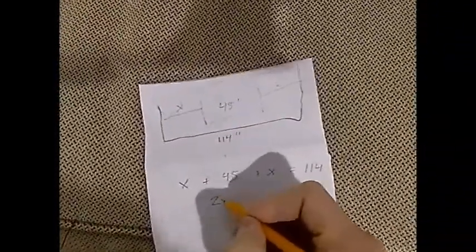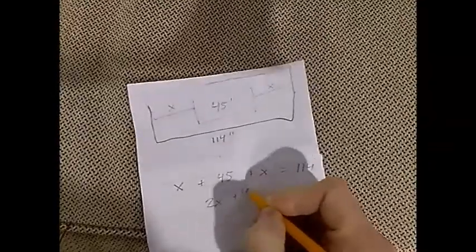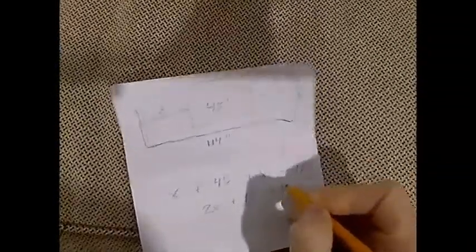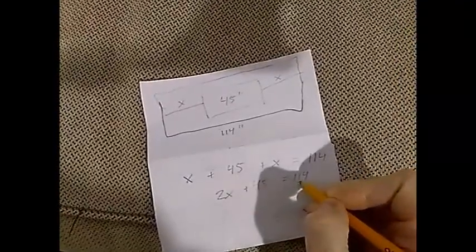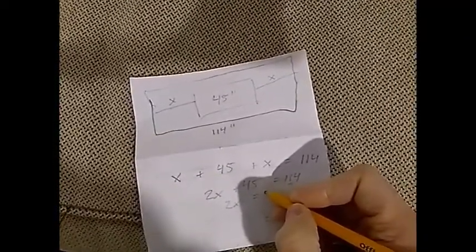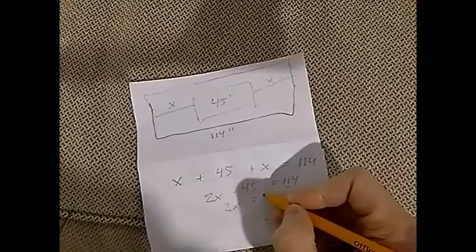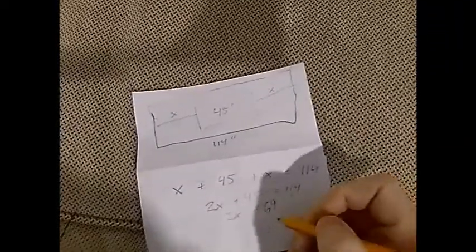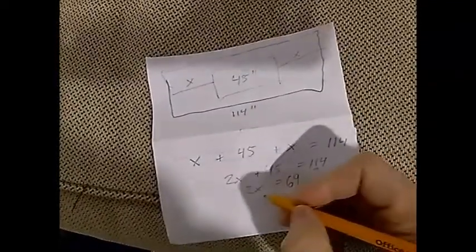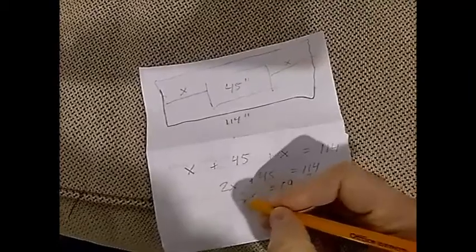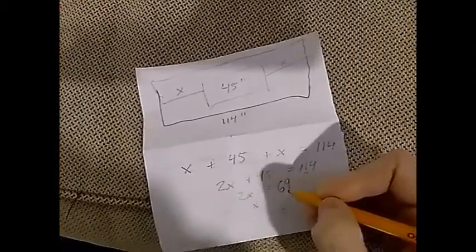So now we've got to divide this by 2 to get the X by itself. Divide this by 2, X will end up equaling 34.5.